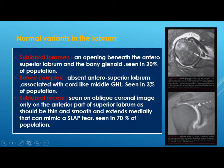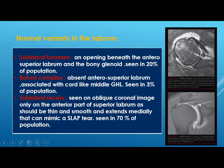The Buford complex is an absent anterior superior labrum with thickening of the middle glenohumeral ligament in a cord-like shape, seen in 3 percent of the population. Another normal variant is the sublabral recess, seen in 70 percent of the population on oblique coronal images on the anterior part of the superior labrum only — it should be thin and extend medially. It may be mistaken for a SLAP tear, but SLAP tears are irregular and extend superiorly or laterally.